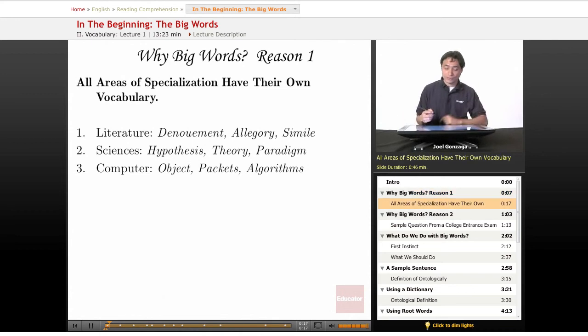Well, the first reason is this: areas of specialization have their own special vocabulary. So if I'm going to talk about something like literature, I'm going to talk about the denouement, I'm going to talk about allegory, I'm going to talk about simile.